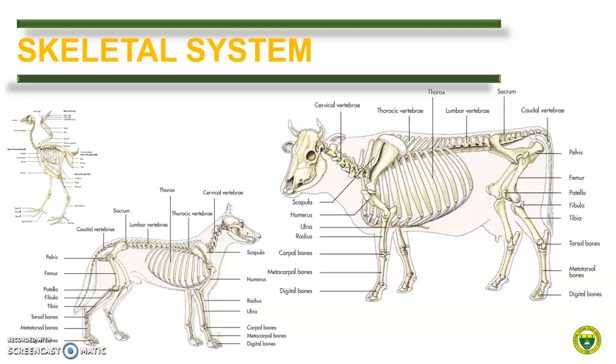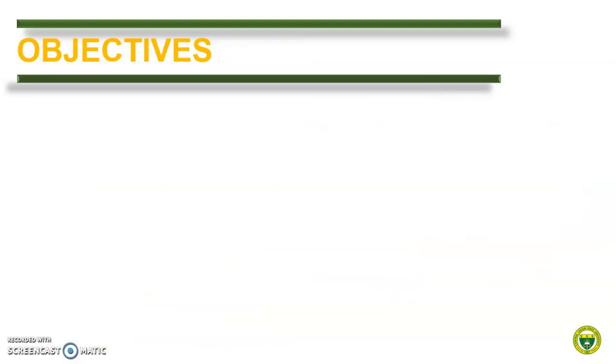As animals' physique vary, their skeletal framework differs as well. For example, the presence of horn in horned ruminants suggests a bony process unique in their frontal bone. As the bird's body is designed for flight, some of their bones fuse or reduce to lighten their overall weight. As carnivores need very powerful muscles of mastication, deep fossae are present in their mandible to accommodate the bulk of well-developed masticatory muscles. This module will highlight the major comparative features of each structure per animal, both for identification purposes and a bit of their physiological function.